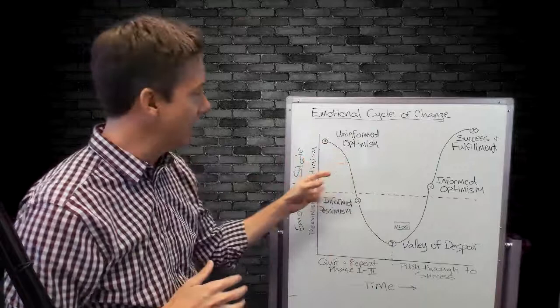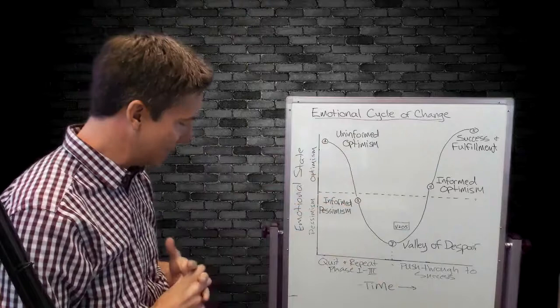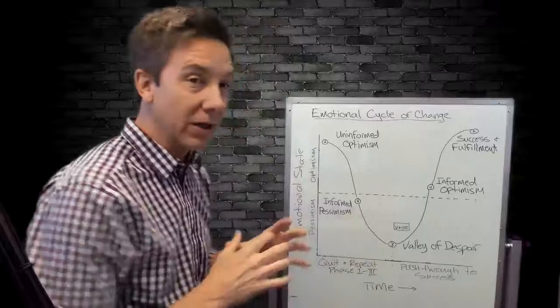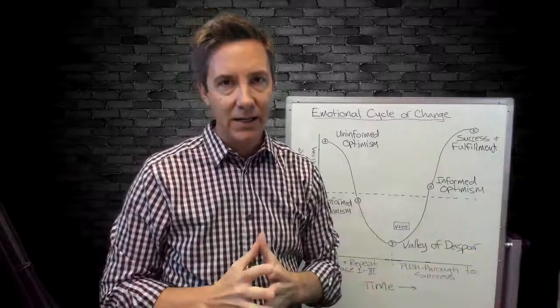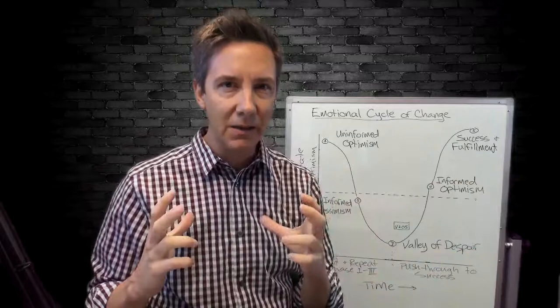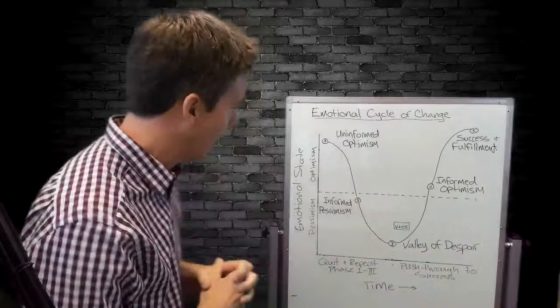As we start to try to adopt these new activities, at this point, we move down to phase number two, which is informed pessimism. At informed pessimism, we start to think, oh man, this is a lot of work. Is it really worth it? Boy, the way it was, wasn't too bad. We're experiencing all of the costs associated with change and none of the benefit yet. So if we've changed our diet or our exercise plan, maybe our muscles are sore or we're going, boy, I feel hungry all the time. We're experiencing the cost and not yet the benefit.